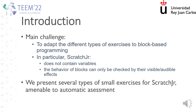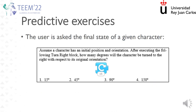In this paper, I am going to present several types of small exercises for ScratchJunior which have been designed and which can be automatically assessed. The first kind is of the predictive type, where the user may ask for the final value of a visible attribute of a character. For instance, in this case, the question asks about how many degrees the character has been rotated.